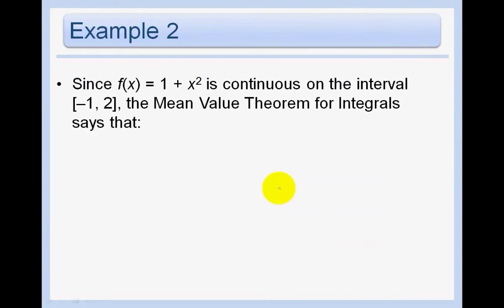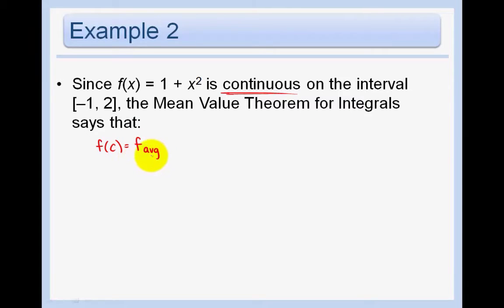Since f of x equals 1 plus x squared is continuous on the interval from negative 1 to 2, we must show that the function is continuous before we can use the Mean Value Theorem for Integrals. The Mean Value Theorem for Integrals says that f of c equals f average, the average value. Well, we found in Example 1 that f average equals 2.